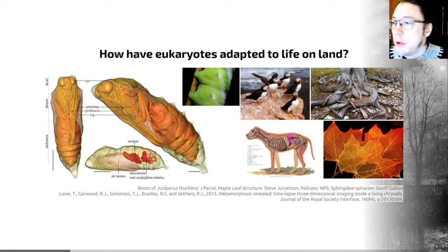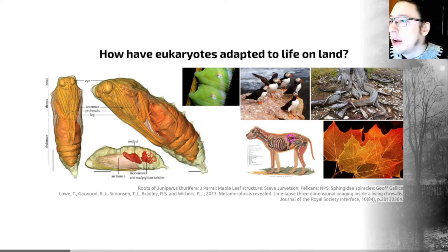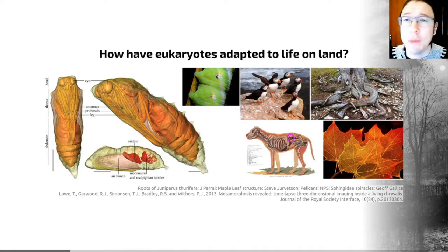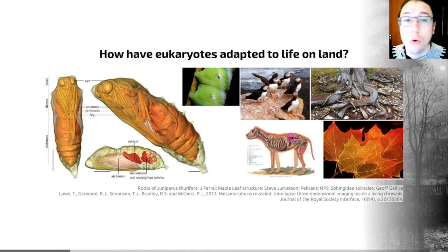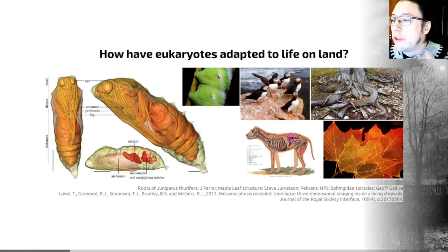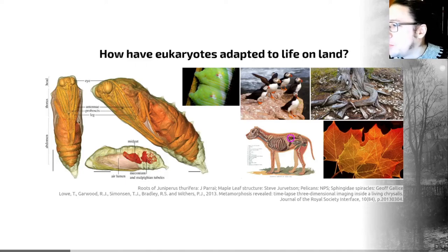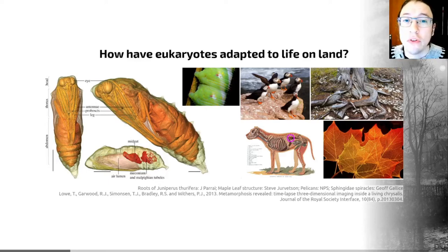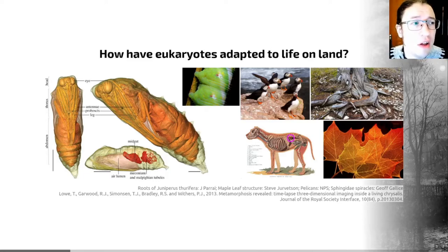In arthropods, adaptations towards not losing too much water include the evolution of spiracles — visible on a caterpillar here, sometimes called stigmata. These are holes in the cuticle, the exoskeleton, to allow air in for respiration without losing too much water. Different groups have also evolved equivalents of kidneys; in a pupating butterfly, the red structures at the back are malpighian tubules, which perform a vaguely similar role to kidneys within some arthropods.